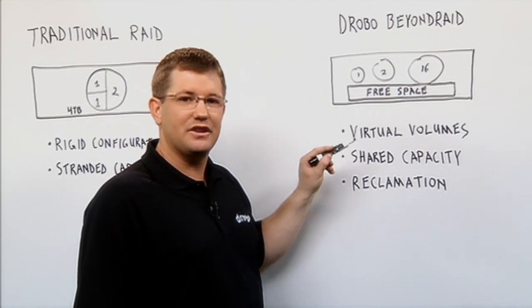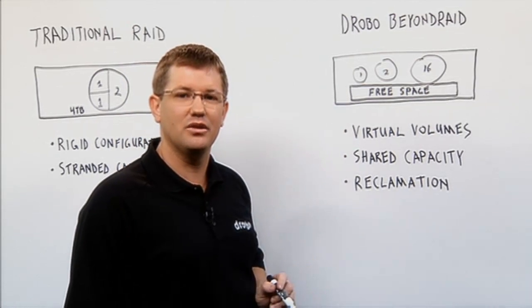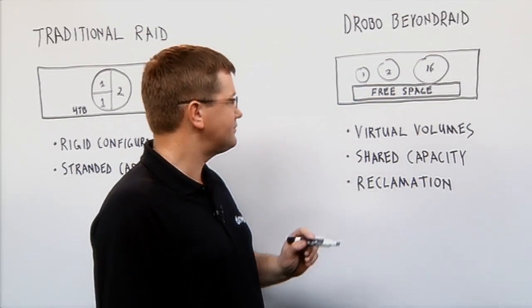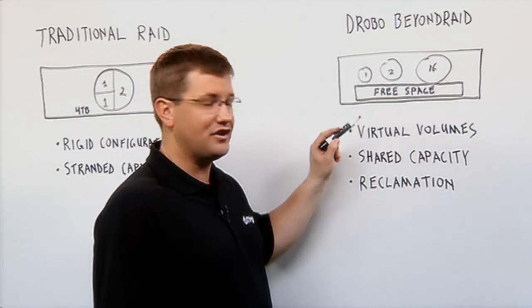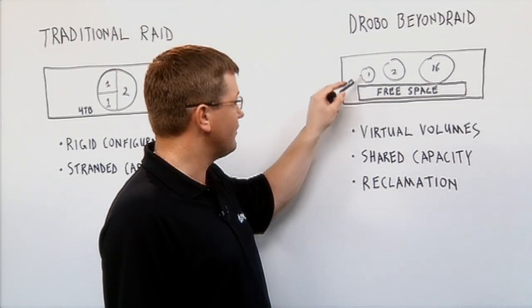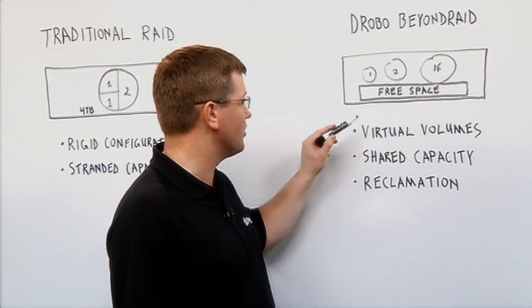The storage capacity in this Drobo is not allocated to that volume until that volume needs to utilize it. So these volumes are very efficient. Free space is never contained within a specific volume.